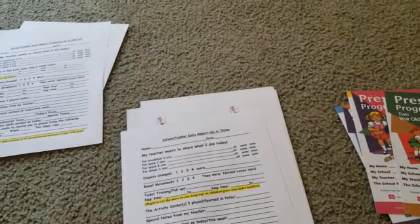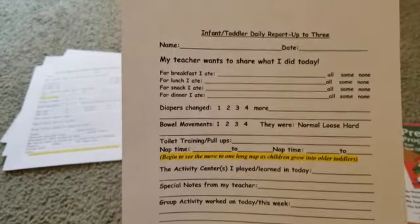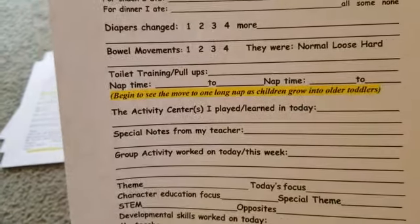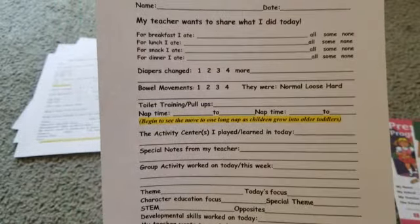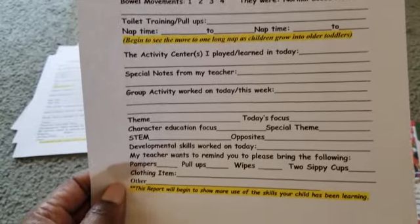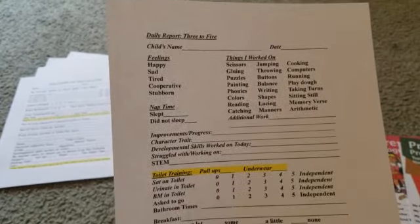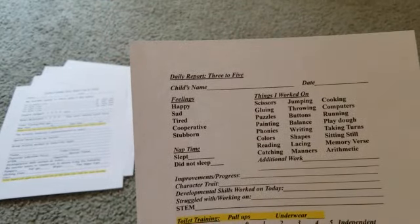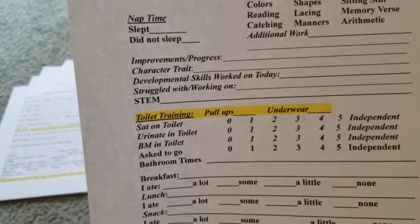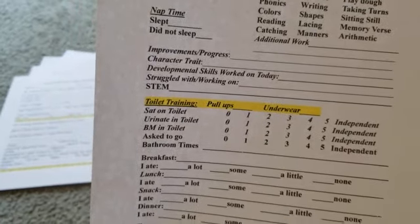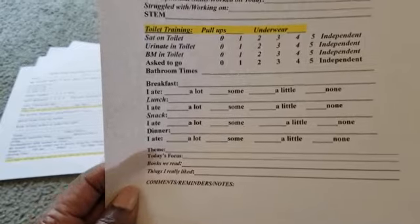Parents get this each day to let them know what I've worked on and how their child has done. This one goes up to age three, and you'll begin to see the move to one long nap as children grow into older toddlers. As the child gets older, like about three to five, I have a different daily report where I talk about feelings, things they worked on, nap times, improvements and progress, developmental skills worked on, and we do a STEM project. We also discuss toilet training — are we using pull-ups or underwear?